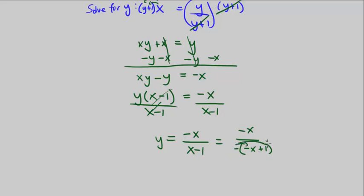If you were to distribute it back, you would get back to what we have here. Now that we have two negatives, those cancel out and we're left with x over, instead of writing it like this, I'm going to say 1 minus x. So either way, these mean the same thing.